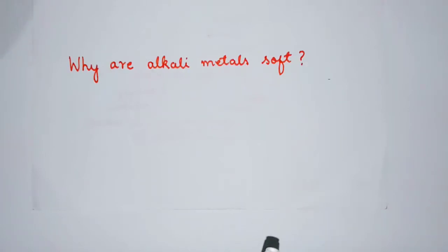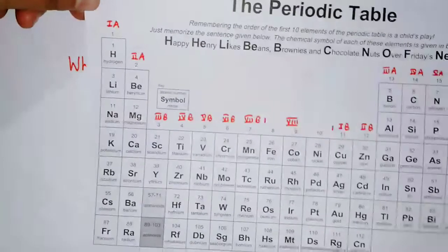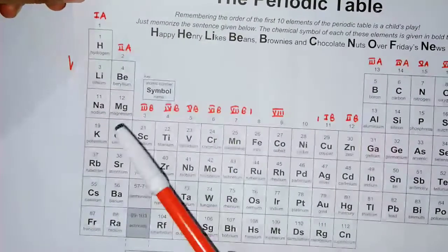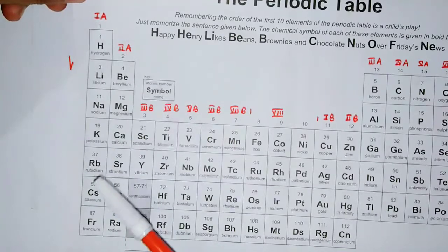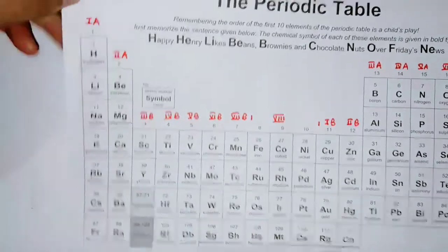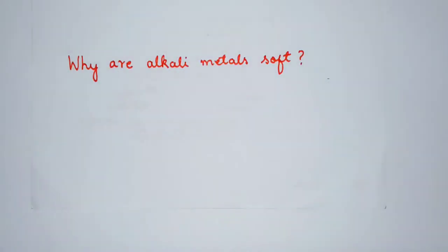Why are alkali metals soft? This is one of the physical properties of the group 1 elements, or the alkali metals. We know that the alkali metals have one electron in the s orbital. Now, why are they soft?